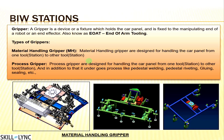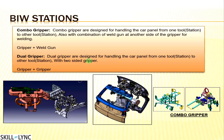This is called a process gripper — the gripper itself is performing a process such as welding or gluing before unloading to another station. A combo gripper is designed for handling the car panel from one tool to another and also incorporates a gun on the other side of the gripper. Once it has picked and dropped the panel, it rotates and starts spotting, welding, or gluing — whatever the process requires.